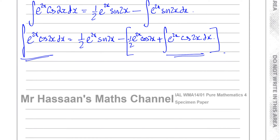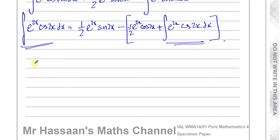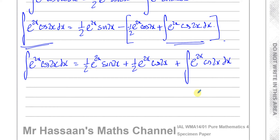What you notice here is that this integral is exactly the same as what we started with — that's the key to answering this question. Let's simplify what we've got. The integral of e^(2x)cos(2x) dx equals (1/2)e^(2x)sin(2x), and the minus times minus gives plus (1/2)e^(2x)cos(2x), plus the integral of e^(2x)cos(2x) dx.